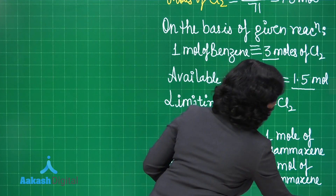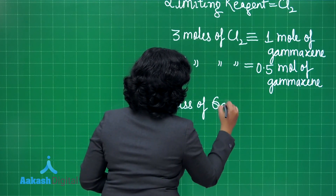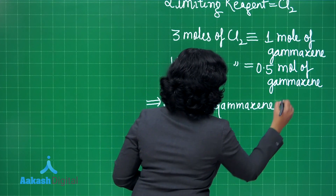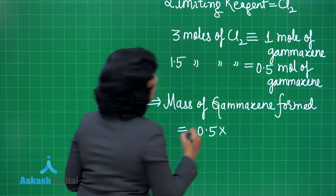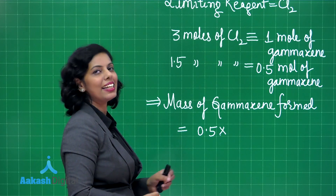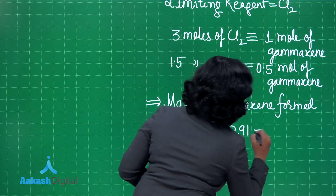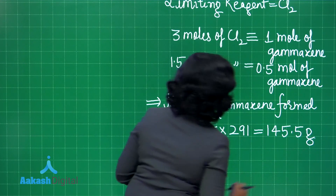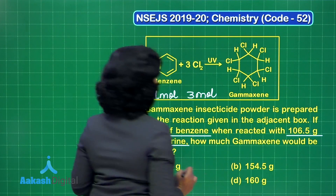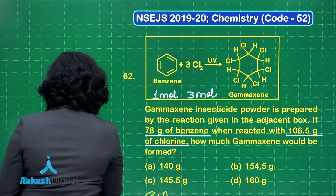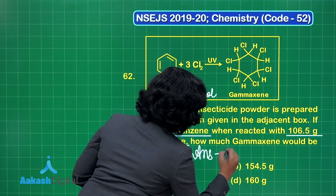Now we find the amount of gammexene formed: moles multiplied by the molar mass of gammexene. The formula is C₆H₆Cl₆, and its molar mass is 291 grams per mole. Multiplying 0.5 × 291 gives 145.5 grams. This would be the amount of gammexene formed. The correct answer is option C.